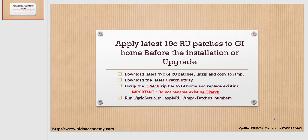In this session I'm going to share with you how to apply the latest 19c release update patches to your Grid Infrastructure home, before the installation or before the upgrade of your existing Grid Infrastructure environment. The first thing you need to do is download the latest 19c Grid Infrastructure patch from the Oracle website.